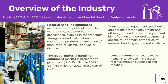The industry includes a variety of tools, vehicles, warehouses, equipment, and accessories involved in the transport, storage, control, calculation, and counting of products at any stage of the manufacturing process, distribution, or disposal — basically all the equipment you need to have in a warehouse. These range from transportation equipment to positioning equipment to storage equipment and more.